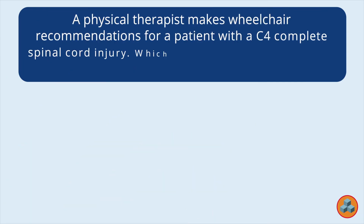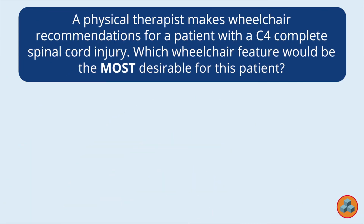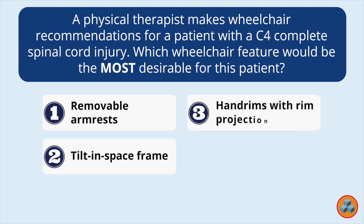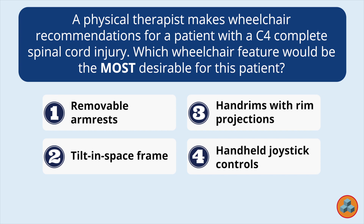A physical therapist makes wheelchair recommendations for a patient with a C4 complete spinal cord injury. Which wheelchair feature would be the most desirable for this patient? Option 1: Removable armrests. Option 2: Tilt and space frame. Option 3: Hand rims with rim projections. Option 4: Handheld joystick controls.